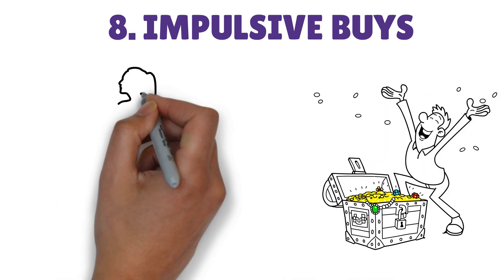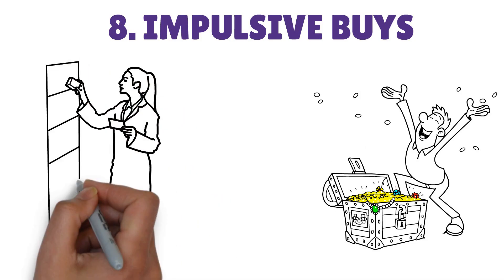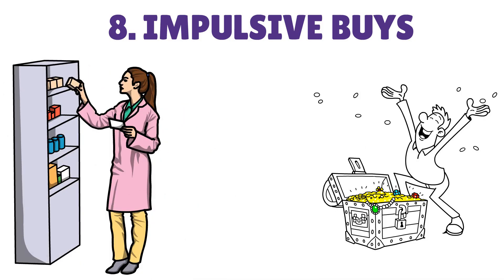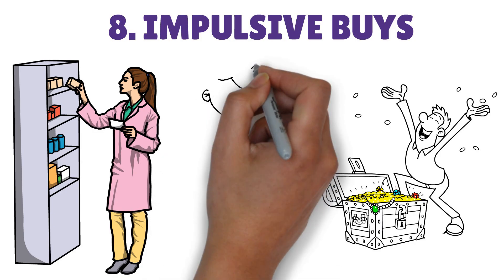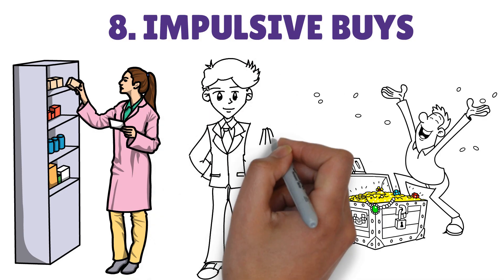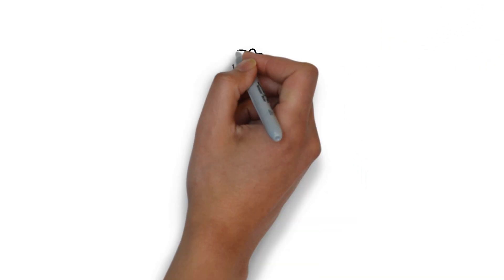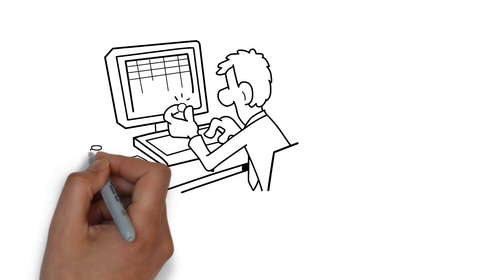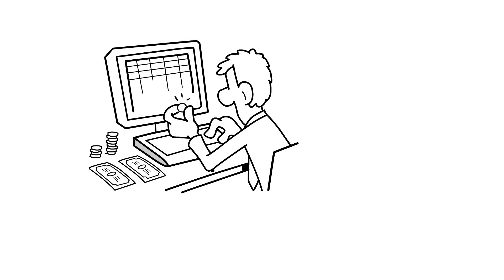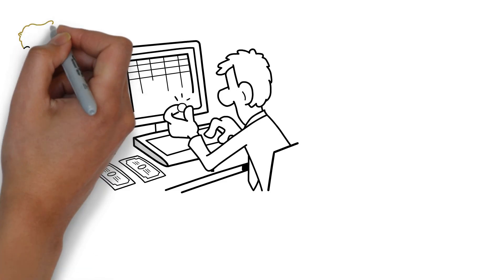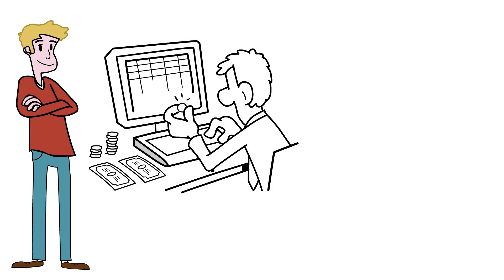Eight: Impulsive buys. People who have a lot of money could be less likely to buy goods on a whim and more likely to consider things through before making a purchase. Those who are well off may be more able to control their expenditures and give serious consideration to their acquisitions. It's possible they have a firm grasp on their financial objectives and priorities and act accordingly when making purchases.